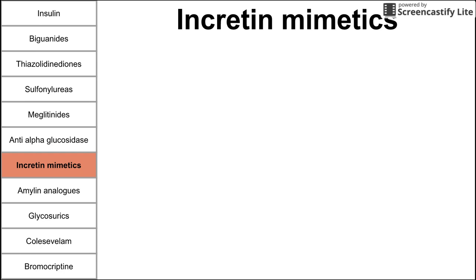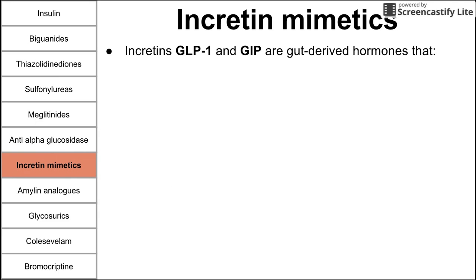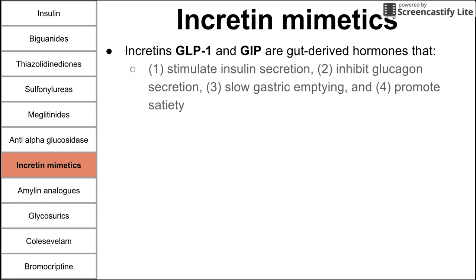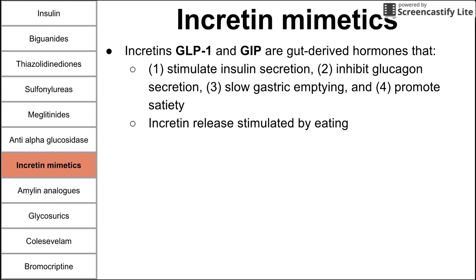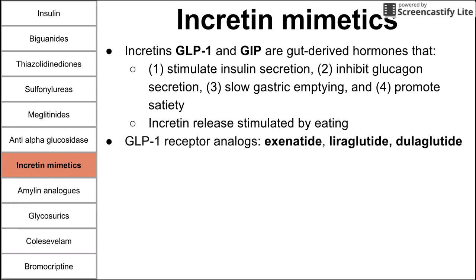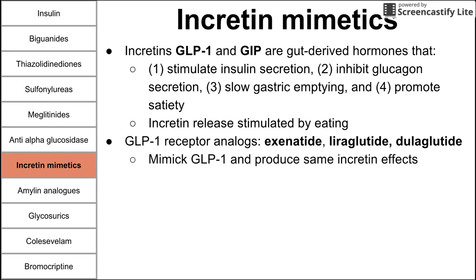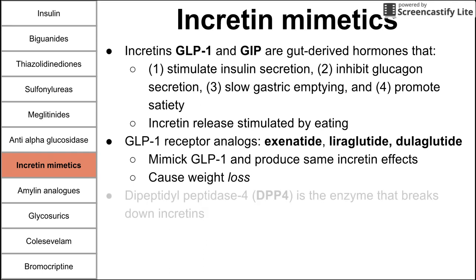Next is the incretin mimetics. The incretins — GLP-1 and GIP — are gut-derived hormones that stimulate insulin release, inhibit glucagon secretion, slow gastric emptying, and promote satiety. Incretin release is stimulated by eating and stretching of the stomach. GLP-1 receptor analogs — exenatide, liraglutide, and dulaglutide — mimic these incretins and produce the same four effects, which can also result in weight loss that is desirable for patients.